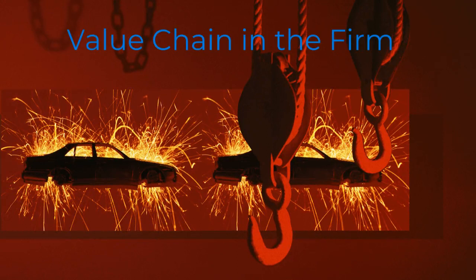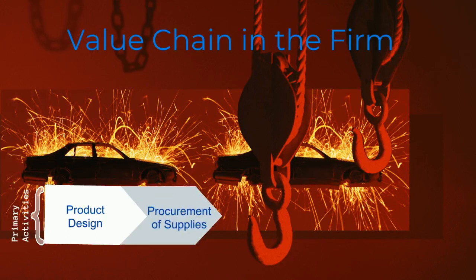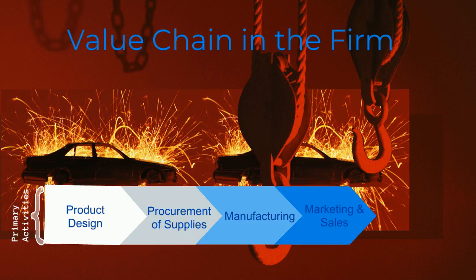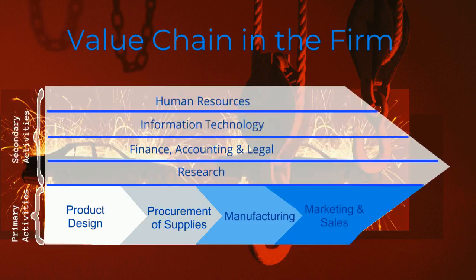For example, a firm's primary activities might start with product design, followed by procurement of supplies, which enables manufacturing, which leads to marketing and sales. And all of these might be supported by secondary activities like human resources or information technology, finance, accounting and legal, and research.